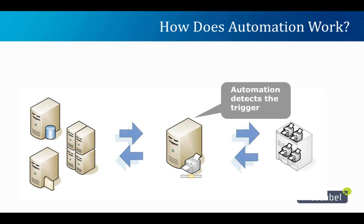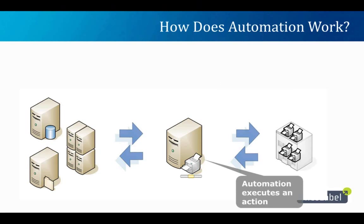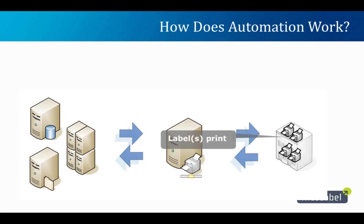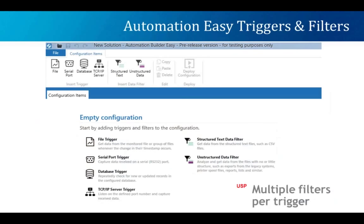Once the trigger occurs, NiceLabel Automation detects it and analyzes the file. It reads through and looks at the variable data, finds the printer name, print quantity, and the label name being referenced. It pieces all those aspects together, then drives the printer with the proper information, the proper label, to the correct printer on your network. As long as we can get data from your application, we can use that to print labels and support new printers on your network.